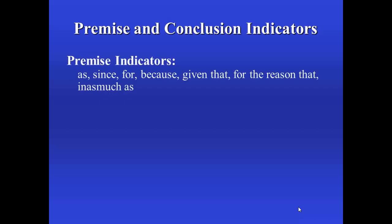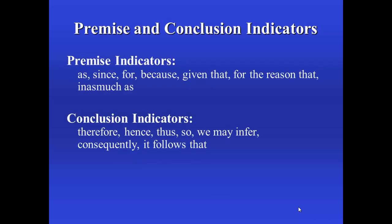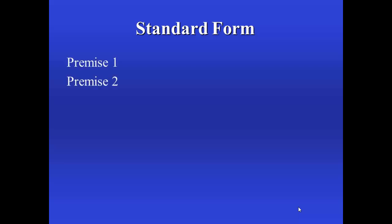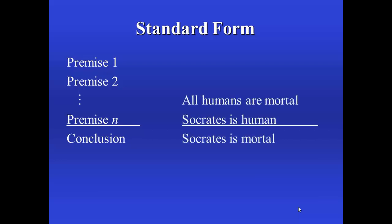Now we had three or one argument on the screen earlier. In order to avoid the confusion that that might cause, we will often want to put arguments into standard form. To do this, we list the premises, however many there are, draw a line under the premises, and then list the conclusion. So for the argument that we've been looking at, it would look like this: all humans are mortal, Socrates is human, and then the conclusion, Socrates is mortal. This is just a neat way to arrange an argument so it's clear what the premises are and what the conclusion is.